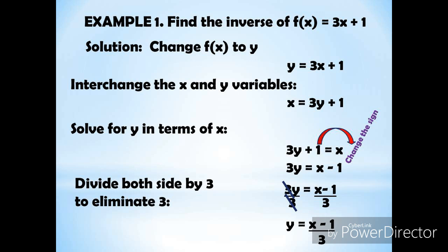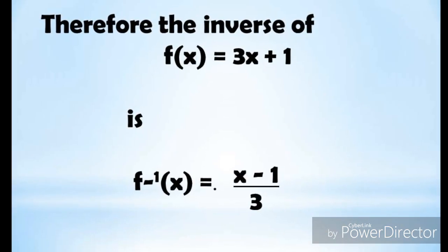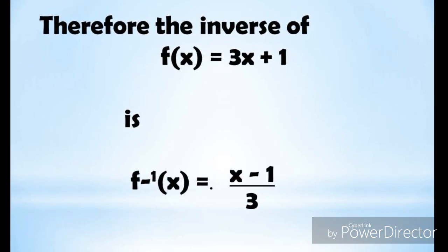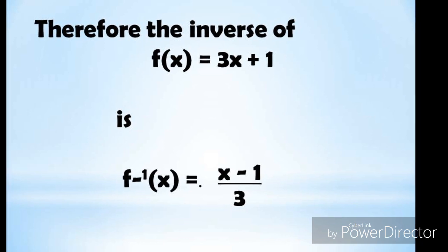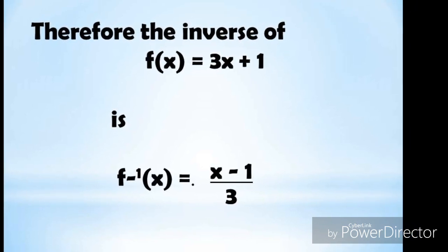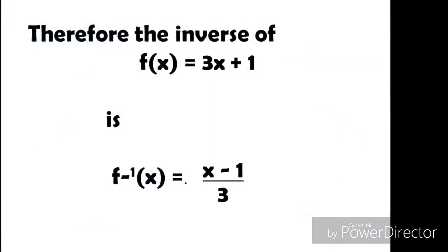To eliminate 3, divide both sides by 3 and cancel, giving y = (x − 1)/3. Therefore, the inverse of f(x) = 3x + 1 is f⁻¹(x) = (x − 1)/3.